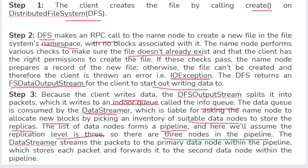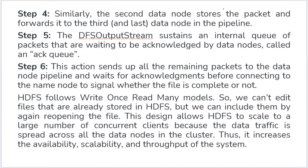The second data node stores the packet and forwards it to the third data node in the pipeline. The DFS output stream also maintains an internal acknowledgement queue of packets awaiting acknowledgement from the data nodes. After writing, I get the acknowledgement back. HDFS follows the write-once-read-many model.